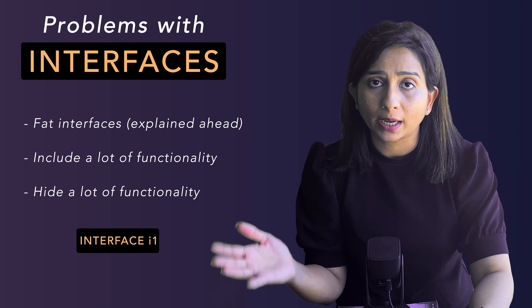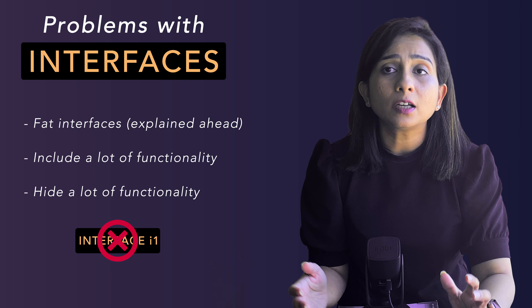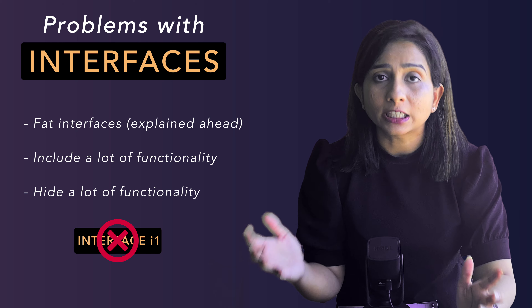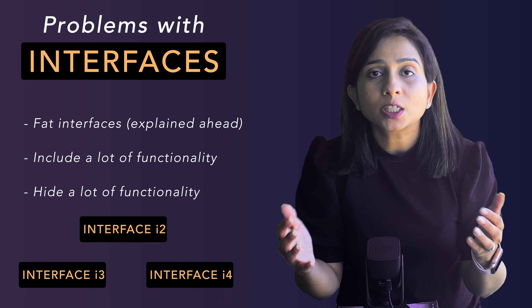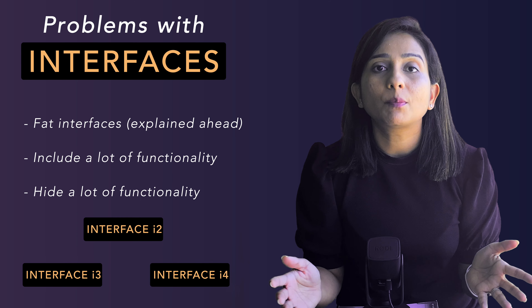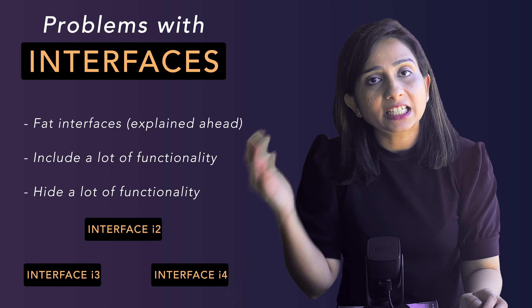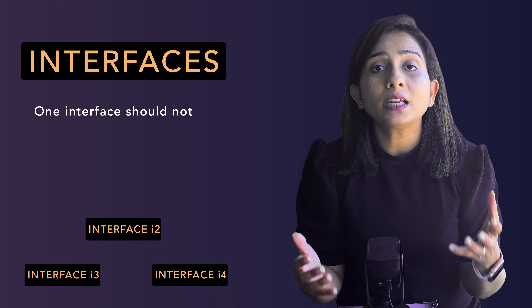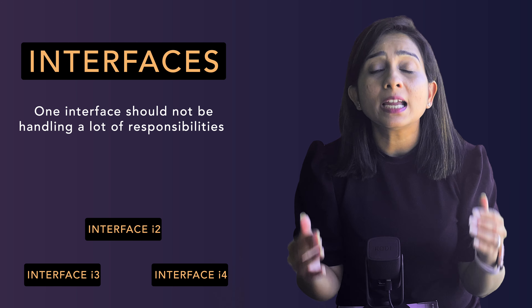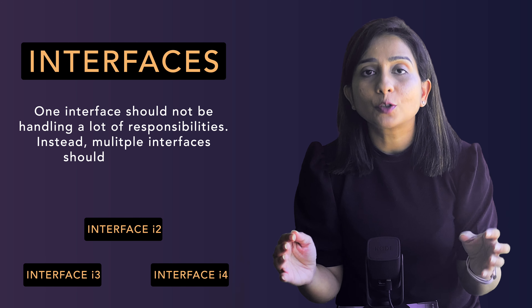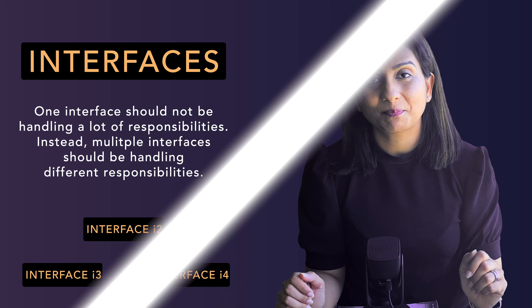This principle targets that problem. It says you should segregate your interfaces as much as you can — instead of designing one or two fat, complex interfaces, design multiple smaller ones. If you think about it, this is an extension of the Single Responsibility Principle: one interface should not handle a lot of responsibility; multiple interfaces should each hide different responsibilities.